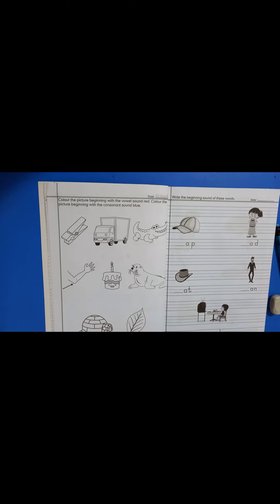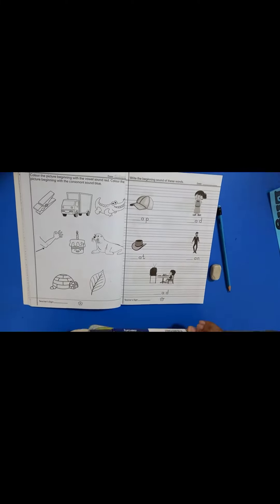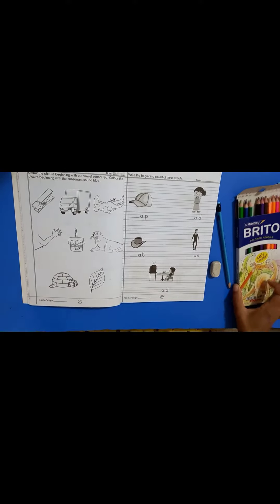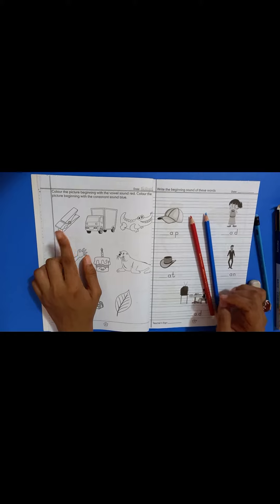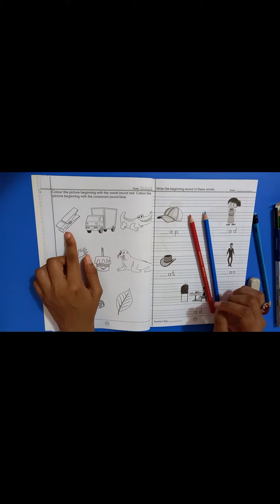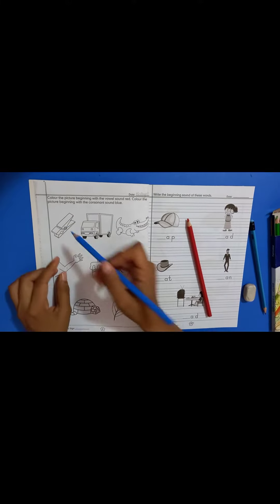Check the color box. Red. It's a peg. Peg starts with P. P is a consonant, so you have to color it blue.